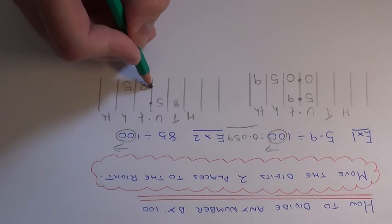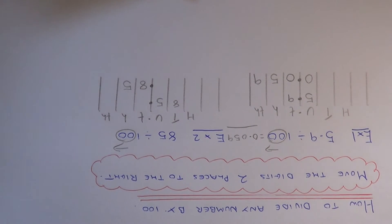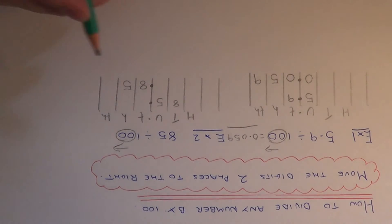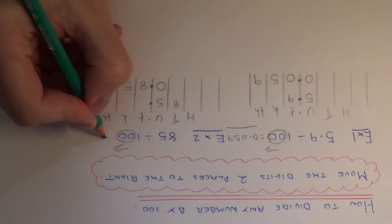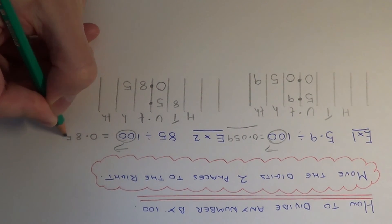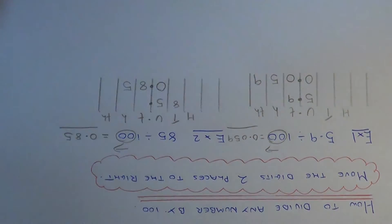The decimal point doesn't move. We don't have any gaps between the decimal point and the numbers, so we don't need to fill in any 0s. We just need to put a 0 before the decimal point. The final answer is 0.85. Thanks for watching.